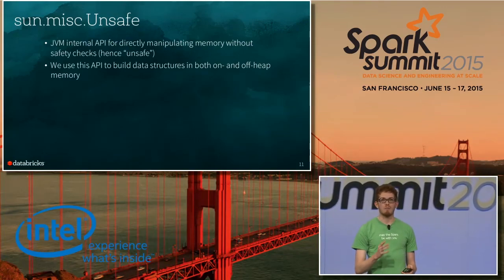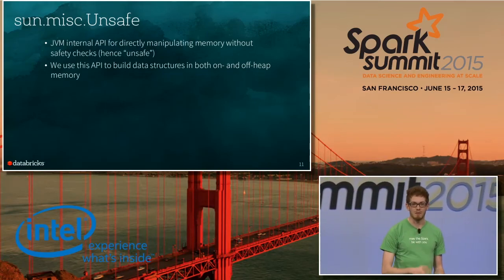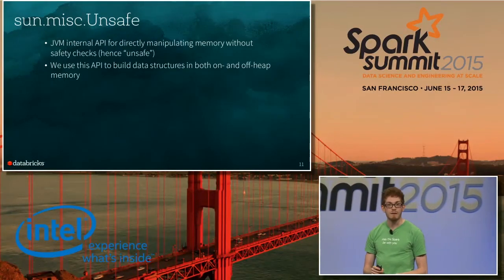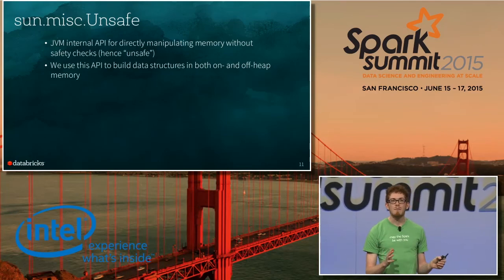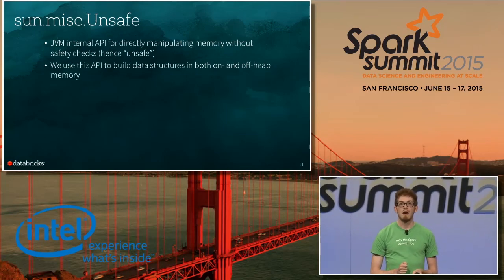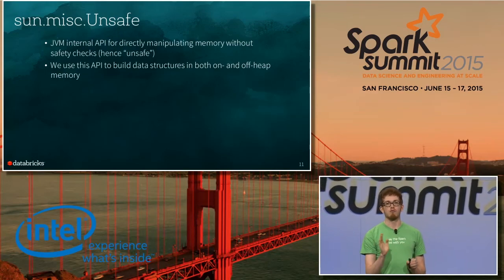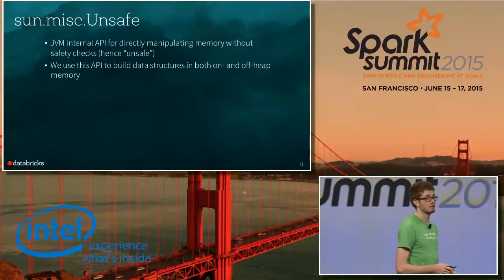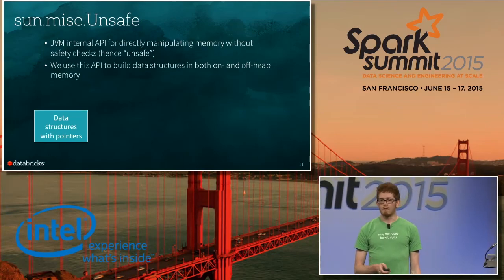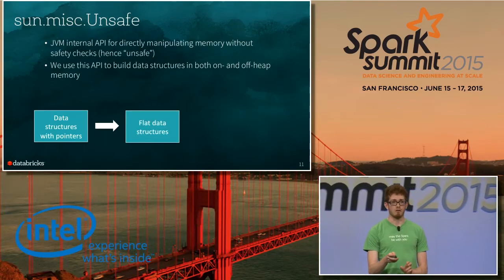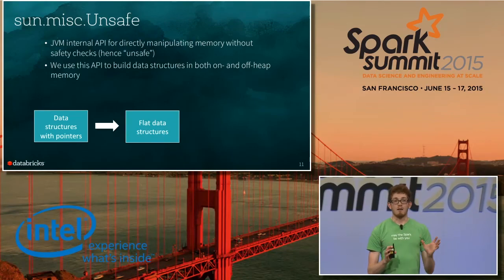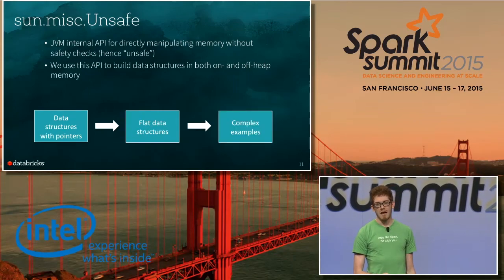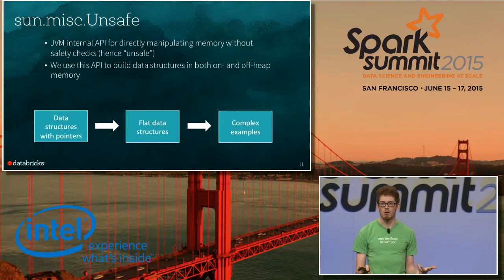How can we do better and eliminate some of these overheads? Inside the JVM there's an API called sun.misc.unsafe. The name 'unsafe' comes from the fact that it's an escape hatch in the memory safety that Java provides. Using this, we can read and write raw regions of memory with no safety checks, and build complicated in-memory data structures. I'll show first how we can build flat data structures like laying out a record, then how to build data structures with embedded pointers like hash maps, and based on that, very complex examples such as hash maps for aggregation and buffers for sorting.